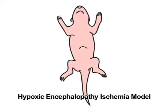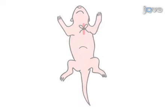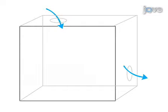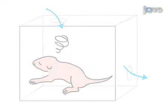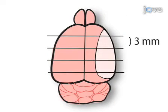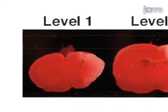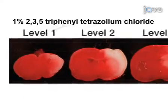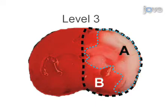To induce this hypoxic encephalopathy ischemia model, postnatal day 7 Sprague-Dawley rat pups undergo microsurgery and left common carotid artery ligation. After one to two hours of recuperation, pups are placed into a hypoxic chamber at 37 degrees Celsius for 100 minutes. Brains are removed and sectioned to three millimeter thick slices, then stained using one percent TTC solution to reveal the area of infarct.